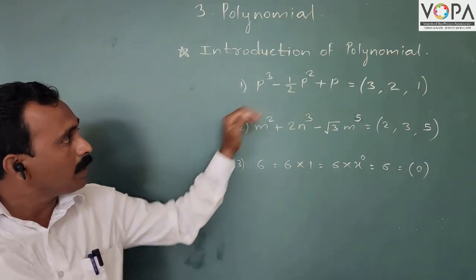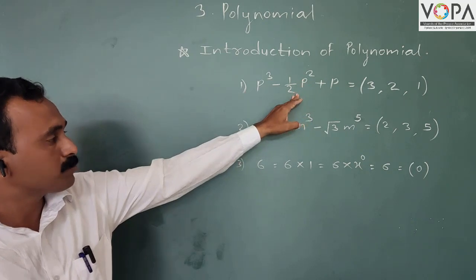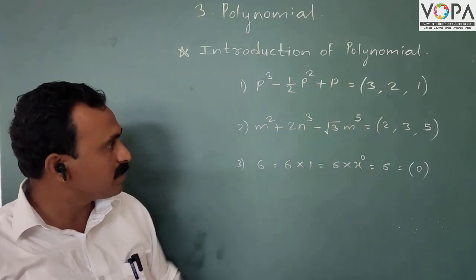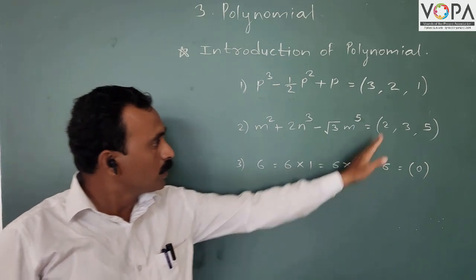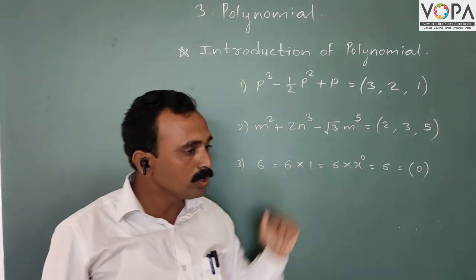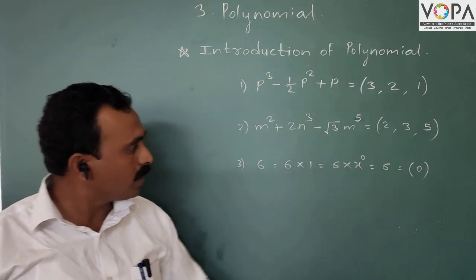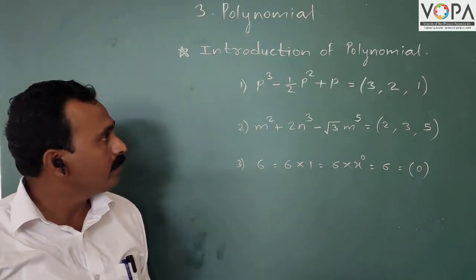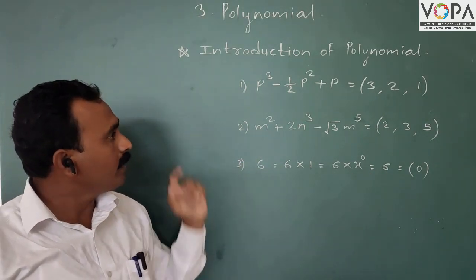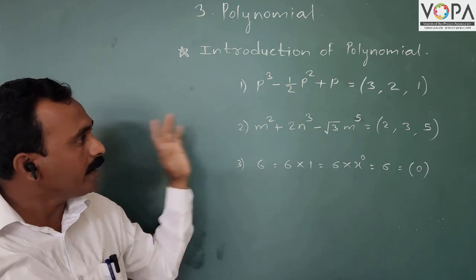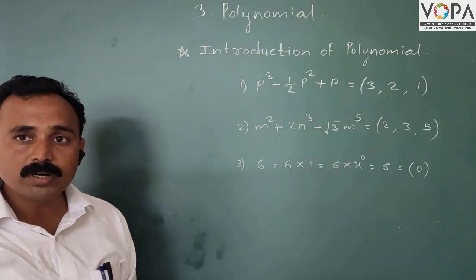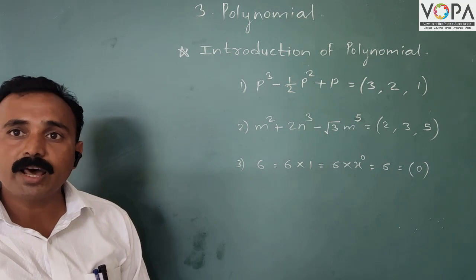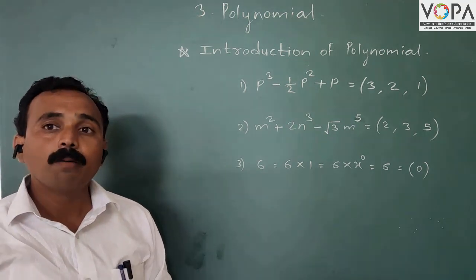The powers of the first algebraic expression are 3, 2, and 1 — all whole numbers. In the second example, the powers are 2, 3, and 5 — also whole numbers. In the third example, the power is 0 — also a whole number. Since all indices are whole numbers, these expressions are called polynomials.